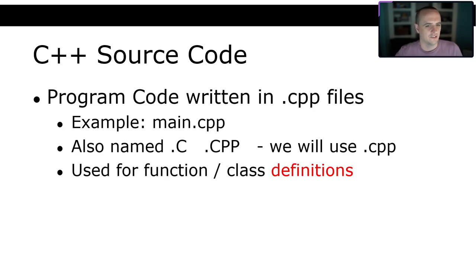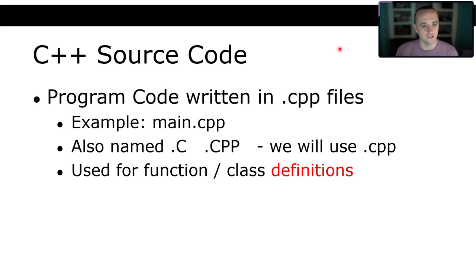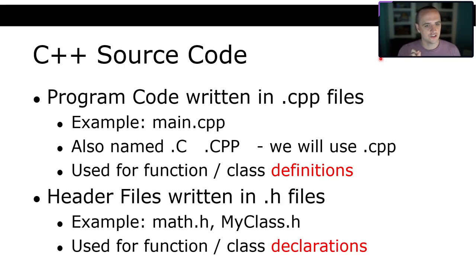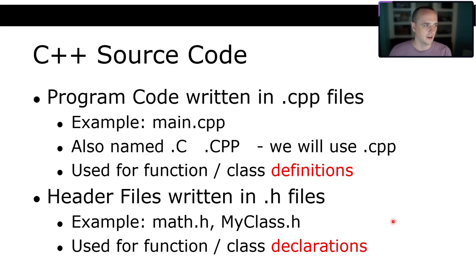Program code is written in .cpp files for C++. Just like Python uses .py and Java uses .java, C++ uses .cpp — for example, main.cpp. The file extension doesn't really matter to the compiler, but it's a convention. In addition to .cpp files, there are header files with the .h extension, like math.h or myclass.h. While .cpp files are used for code definitions, header files are used for function and class declarations.